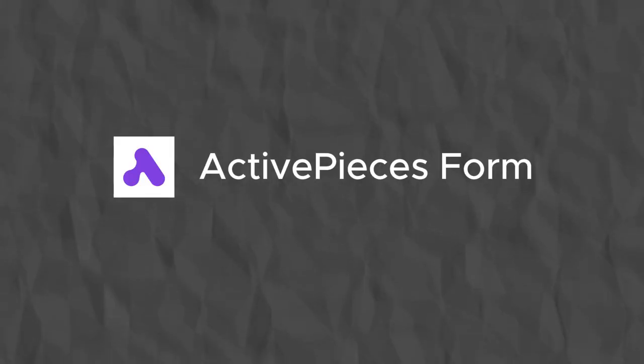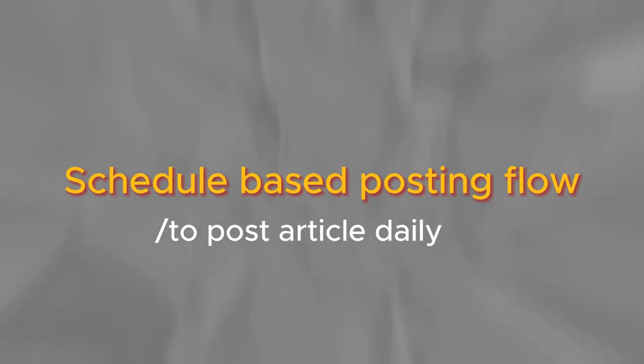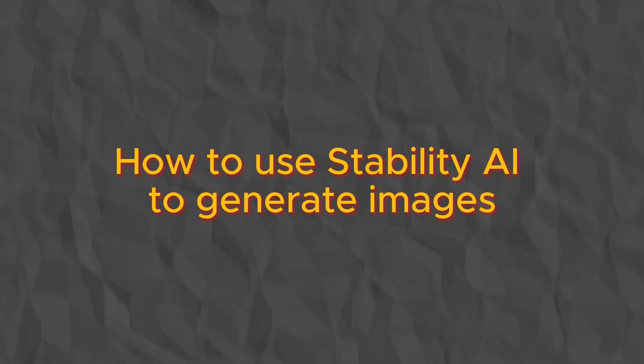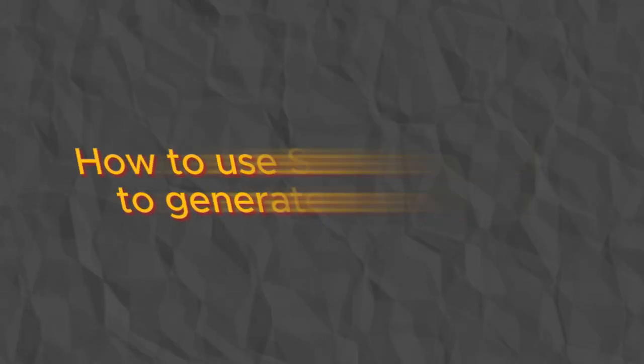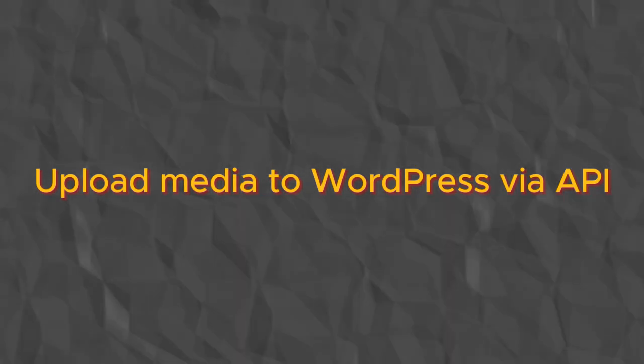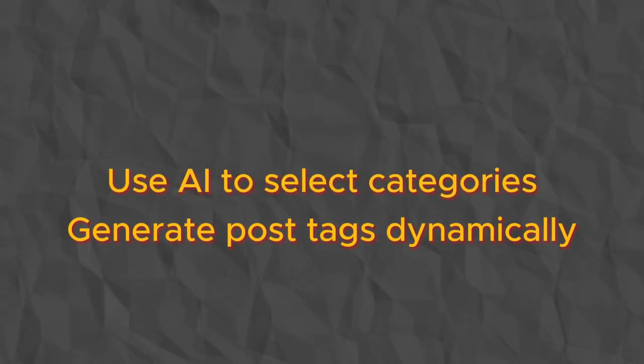We will use the ActivePieces form to create an article based on a title, and the schedule-based flow to create and publish a post daily to your WordPress site automatically. I'll show you how to create a long-form article using OpenAI GPT, use Stability AI to generate a featured image, and also generate images sprinkled within the article. I'll also cover the custom API action to extend functionality for an existing piece in ActivePieces, including how to set up the feature image, upload image media to WordPress, and generate post tags and use AI to set the post category.